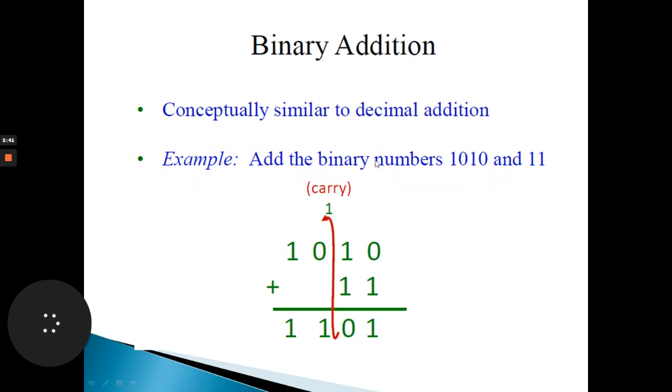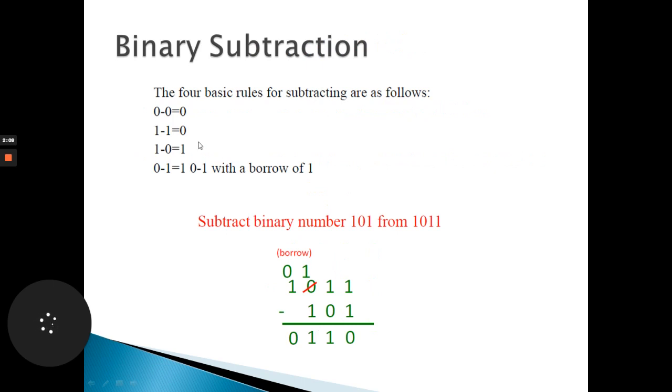Let us explain it in a more convenient way. Adding the binary numbers 1010 and 11: 0 plus 1 gives 1. 1 plus 1, importantly, is 0 and the carry is being generated. Now this carry along with the next bit, 1 plus 0 will be 1. And here as there are no other bits for the addition, there will simply be 1 taken as it is.